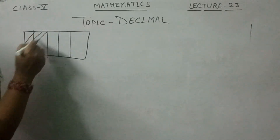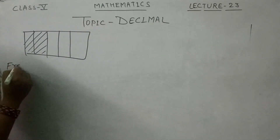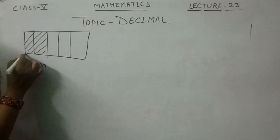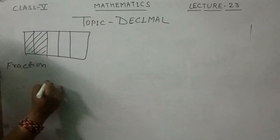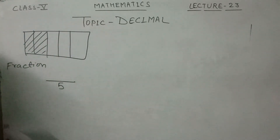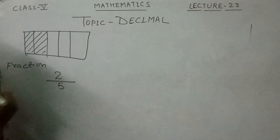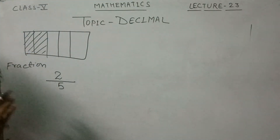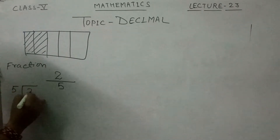Let me show how to write a fraction and convert it to decimal. Count the total number of boxes — there are 5. And 2 boxes are shaded. So the fraction is 2/5. To convert it to decimal, divide: 5 is the divisor and 2 is the dividend. Since 2 is less than 5, we put a point and get 0.4. So 2/5 equals 0.4 in decimal.